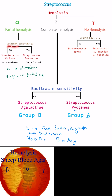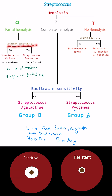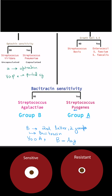In partial hemolysis, we divide further on the basis of optochin sensitivity — that is, antibiotic sensitivity. If it is not sensitive, then it is Streptococcus viridans, and if it is sensitive then it is Streptococcus pneumoniae.